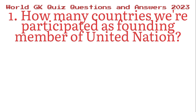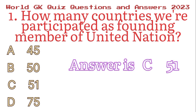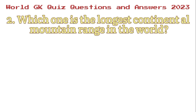Number 1. How many countries participated as founding members of the United Nations? A. 45, B. 50, C. 51, D. 75. Answer is C. 51.